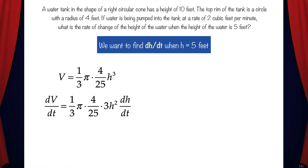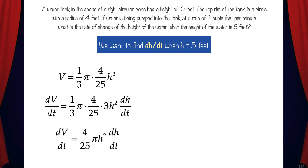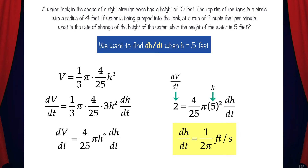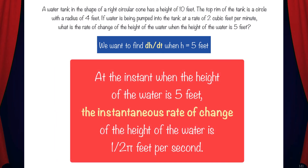So dv/dt equals one-third pi times four-twenty-fifths times three h squared dh/dt. We can cross out the threes and we get four-twenty-fifths pi h squared dh/dt. Now the final step is to plug in values and solve for dh/dt. We plug in 2 for dv/dt and 5 for h, and we get dh/dt equals one over two-pi feet per second. This means at the instant when the height of the water is 5 feet, the instantaneous rate of change of the height of the water is one over two-pi feet per second.